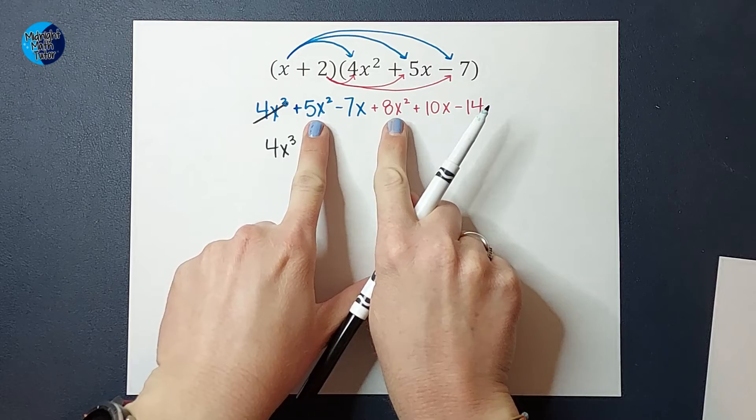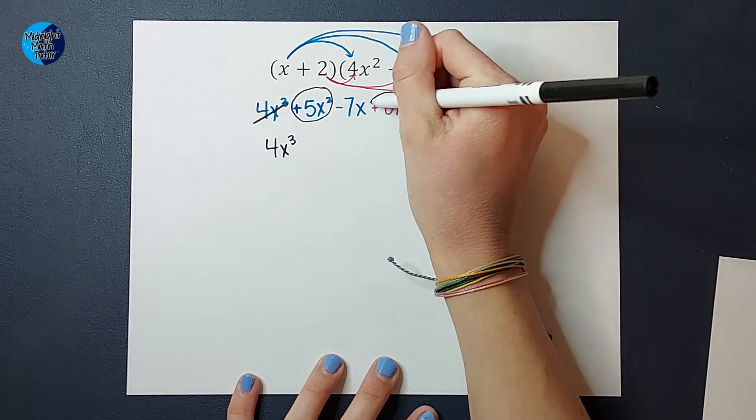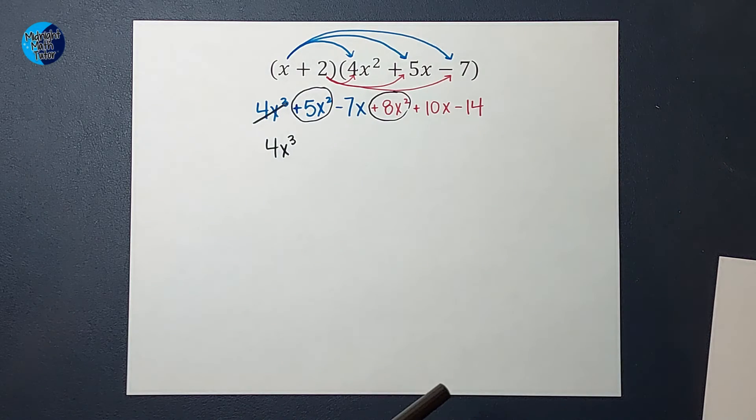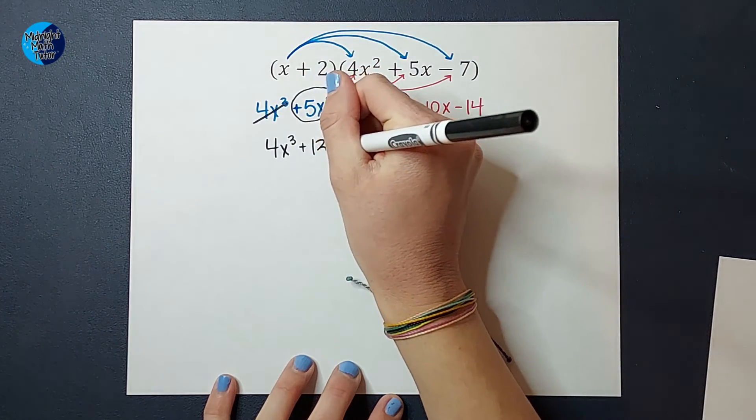But I do have 2 that have x squared. So I can combine those guys. So 5x squared plus 8x squared is going to give me 13x squared.